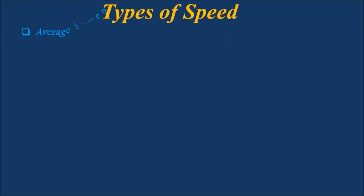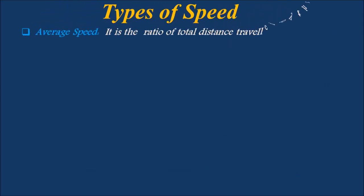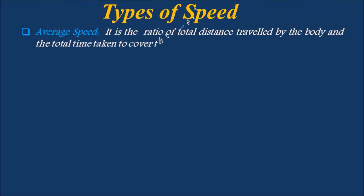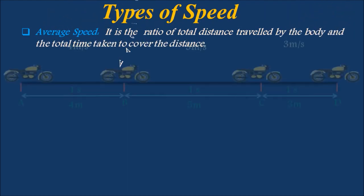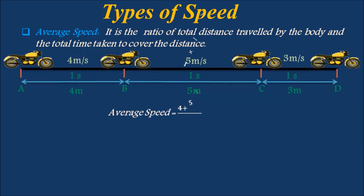Average speed is the ratio of total distance traveled by the body to the total time taken to cover the distance. Here, the bike moves with speeds of 4 m/s along A-B, 5 m/s along B-C, and 3 m/s along C-D. Average speed equals 4 plus 5 plus 3 divided by 3, which equals 4 meters per second.